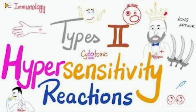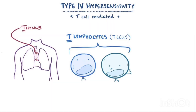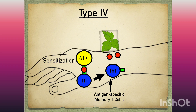Hypersensitivity reactions are classified into four types: type 1, also known as immediate type; type 2 or cytotoxic type; type 3, also known as immune complex mediated type; and type 4, or delayed cell-mediated type. Let's have a brief look at type 4 hypersensitivity reaction.